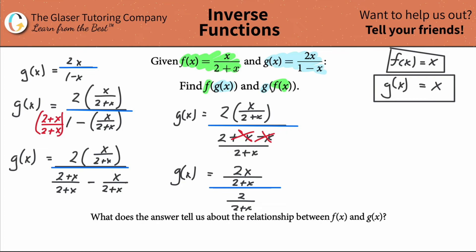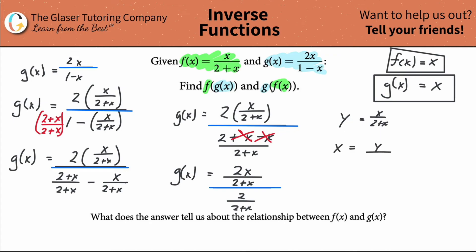You can also prove it by finding the inverse directly. Take f of x equal to x over two plus x. Call it y, then swap x and y everywhere: x equals y over two plus y. Solve for y — do cross multiplication. Since this is x over one, we get x times two plus y equals y. Distribute: two x plus xy equals y.